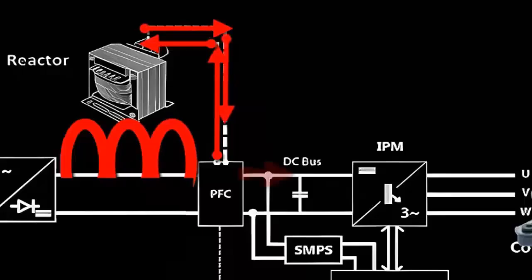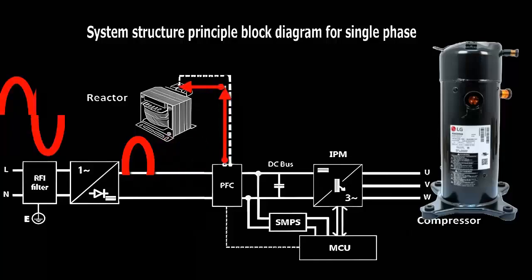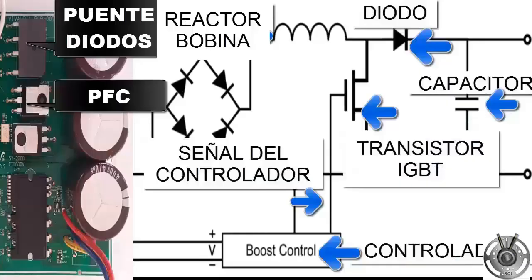The power factor circuit allows electricity to flow smoothly and constantly, avoiding sudden peaks and dips. This ensures that the air conditioner operates efficiently.